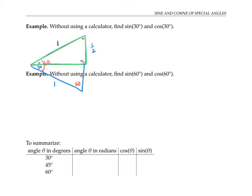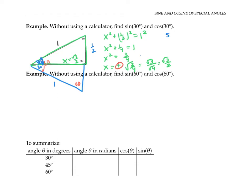Going back to the original triangle, let's use the Pythagorean theorem to find the length of its longer side x. The Pythagorean theorem says x squared plus one half squared equals one squared. So x squared plus one fourth equals one, x squared is three fourths, and x is the square root of three fourths. Using the positive version, that gives the square root of three over two. Now using our original triangle, the sine of the 30 degree angle is opposite over hypotenuse. The opposite of this angle is one half and the hypotenuse is one, so sine of 30 degrees is one half. Cosine of 30 degrees is adjacent over hypotenuse, which is the square root of three over two divided by one.